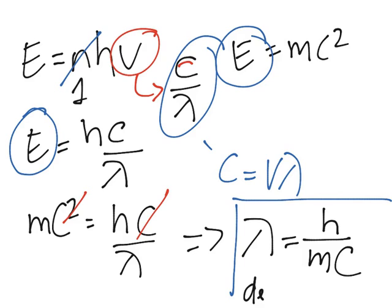So de Broglie equation. And let's solve a quick problem using it. So let's just do something very simple. What is the wavelength of an electron traveling at the speed of light?